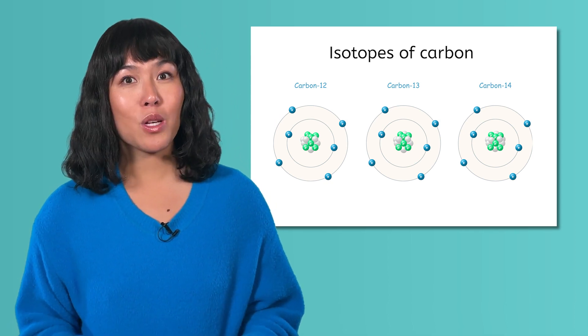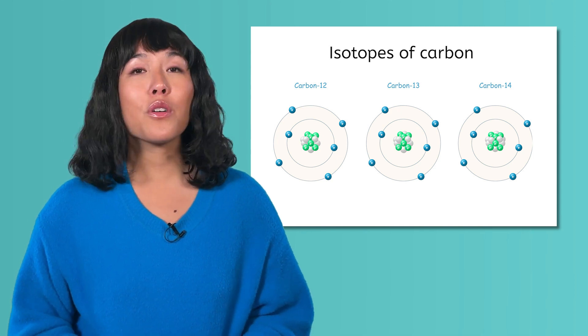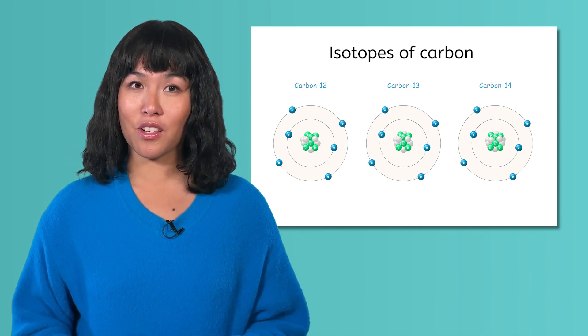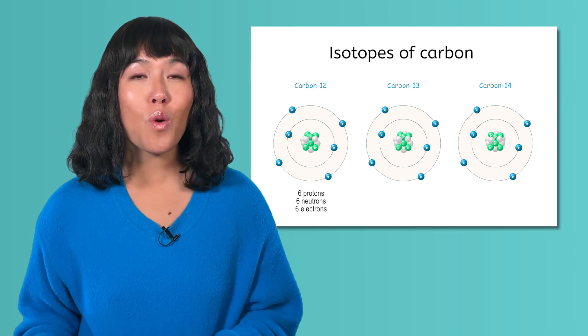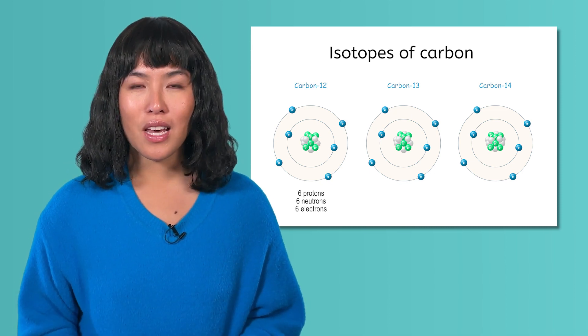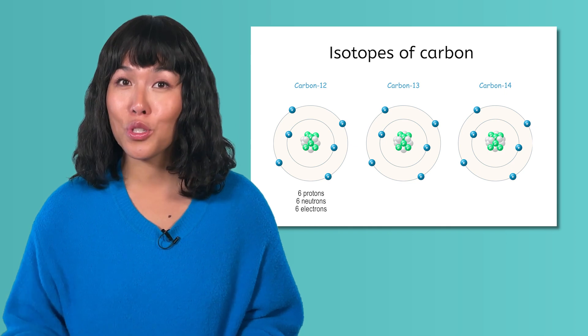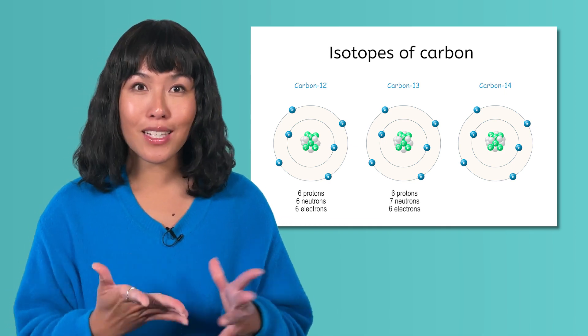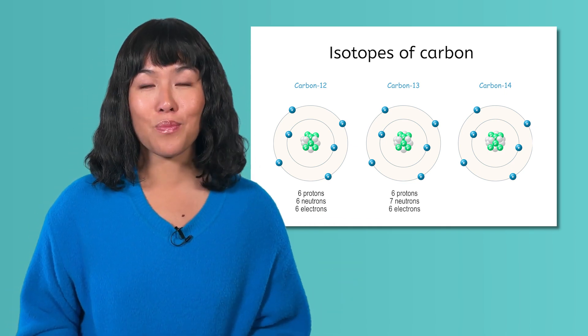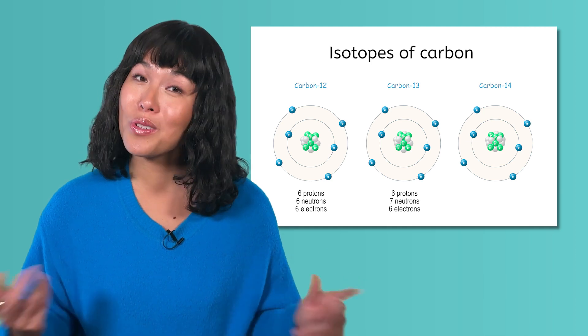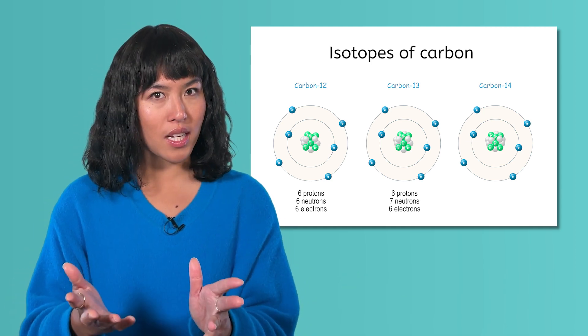The number in the name, 12, 13, or 14, refers to the mass of that particular isotope. So carbon 12 has 6 protons and 6 neutrons, because 6 plus 6 equals 12. Carbon 13 has 6 protons and 7 neutrons, because 6 plus 7 equals 13. How many neutrons does carbon 14 have?